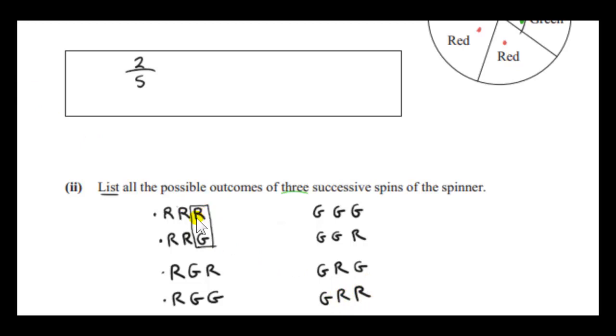By the way, we could have just interchanged R with G. You know, just replace all the R's with G's to go from here to here. And similarly for the other outcomes, just interchange R with G. So anyway, we have all eight outcomes.